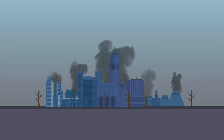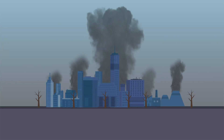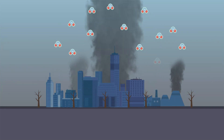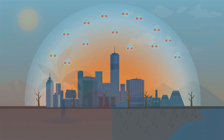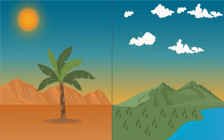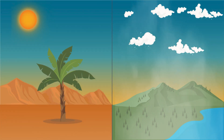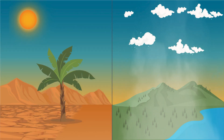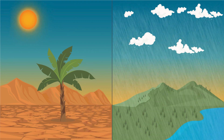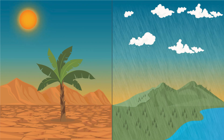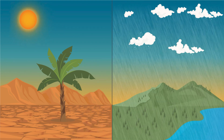As more carbon dioxide is introduced into the atmosphere, our planet becomes warmer. In warmer conditions, more water evaporates from the ocean and land, causing drier areas to lose more water and wetter areas to receive more rainfall or snow.